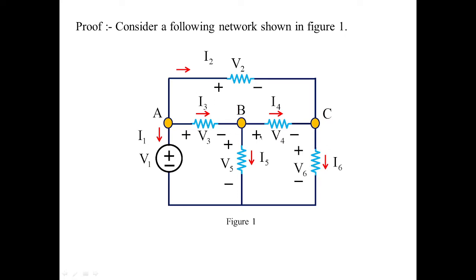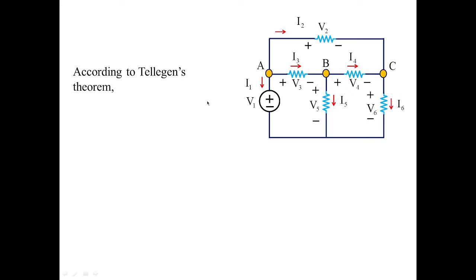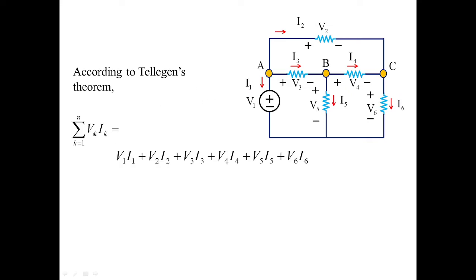This is how we have selected the powers in this circuit and we have to prove that the sum of the powers in all branches equals zero. According to Telegan's theorem, we are expressing individual branch voltages and currents in power form. So we have V1I1, V2I2, V3I3, V4I4, V5I5, and V6I6.